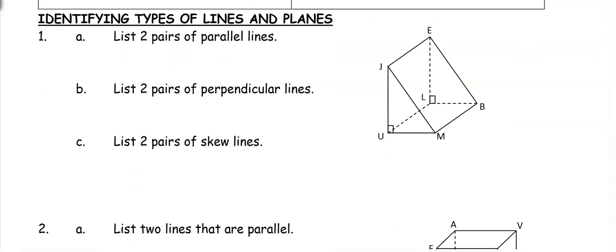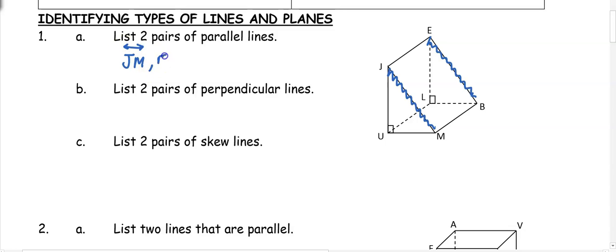Let's try identifying some of them. In number one, list two pairs of parallel lines. We have a triangular prism with two triangular bases. One pair of parallel lines could be JM and EB — they're both going in the same direction and they're never going to intersect. Another example of parallel lines could be UL and JE — they're both going in the same direction and they're never going to intersect.